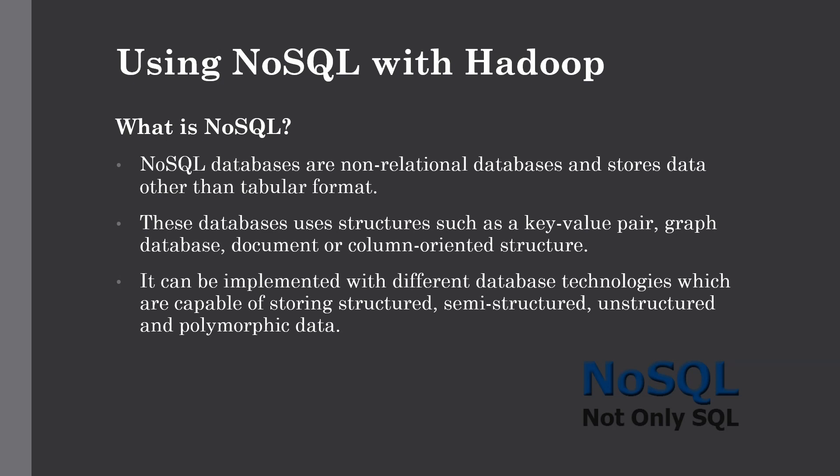Tabular format means data stored in column and row format as we have seen in MySQL. That data has some integrity and only specific types of records can be inserted into our table. If a column requires integer data type, we can only insert records with an integer entry for that field. Relational databases have some predefined rules, but NoSQL goes one step ahead and allows flexible schema.